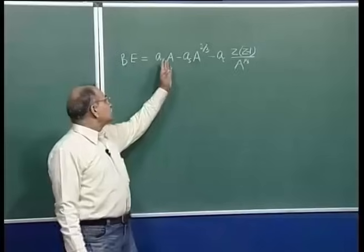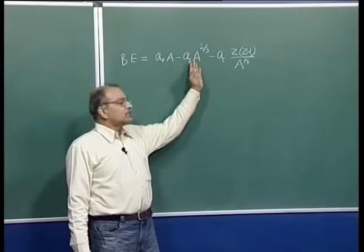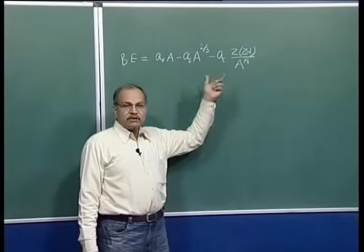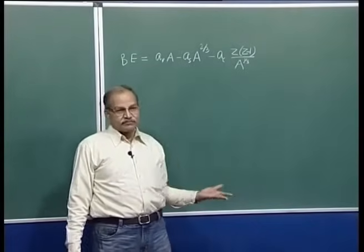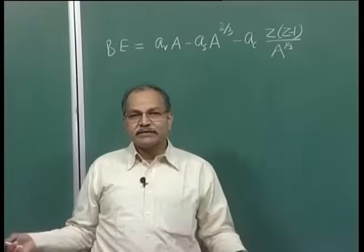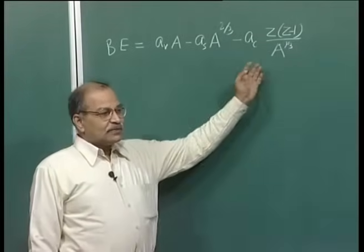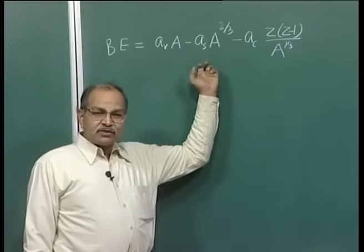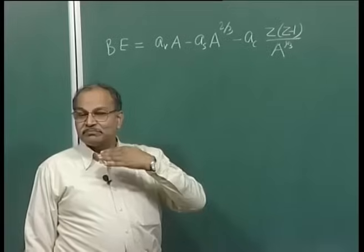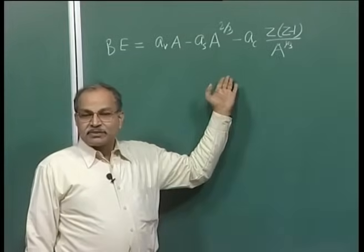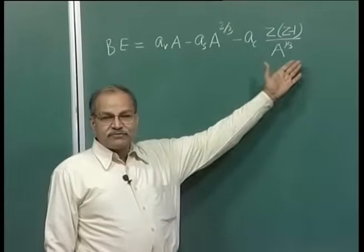These three terms — volume, surface, and Coulomb — represent contributions from the nuclear volume, surface nucleons, and proton pairs respectively. Up to here we can go with classical description. Taking these three terms and properly choosing A_V, A_S, and A_C, the general shape of the binding energy per nucleon curve can be reproduced. But there are two important quantum mechanical correction terms that we have to add. One is the asymmetry term.